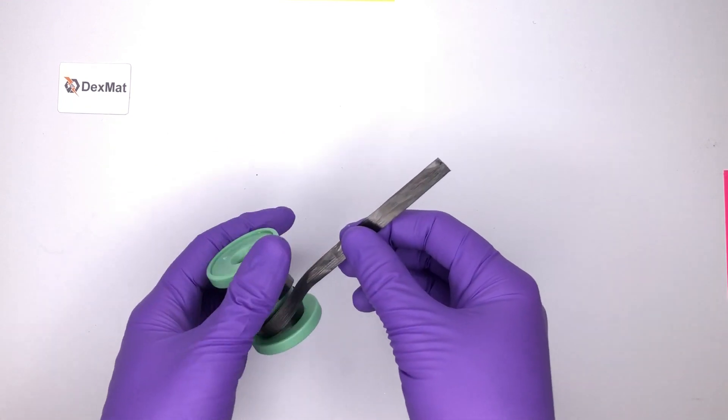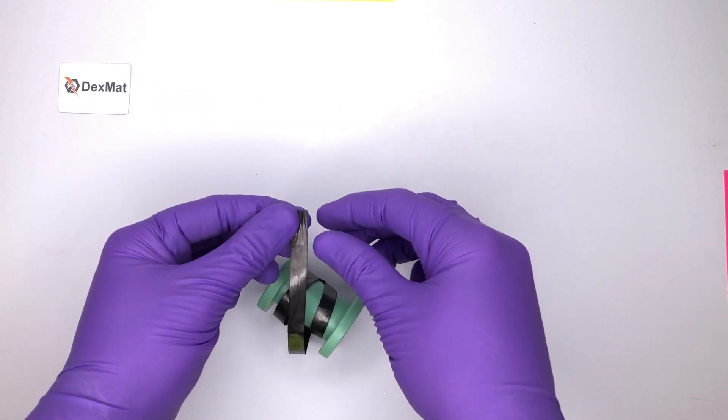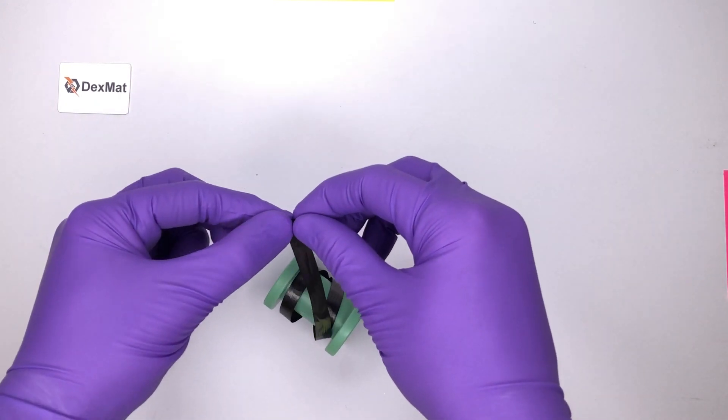However, it's useful to know and to remember that the consequence of this alignment is that it's quite easy to tear if the tear is along the direction of the tape.